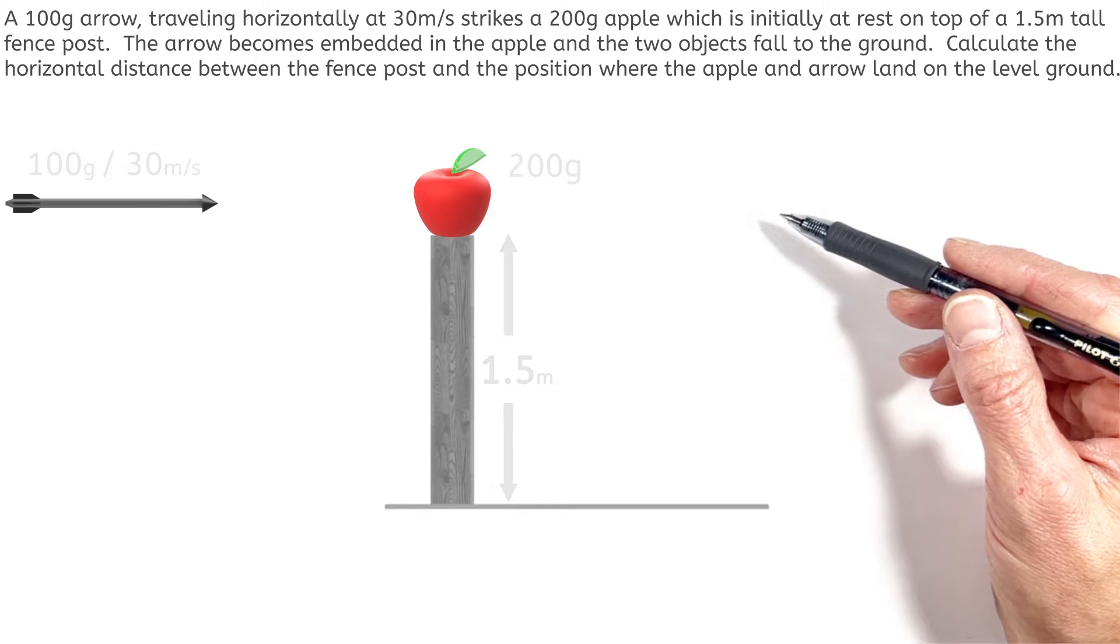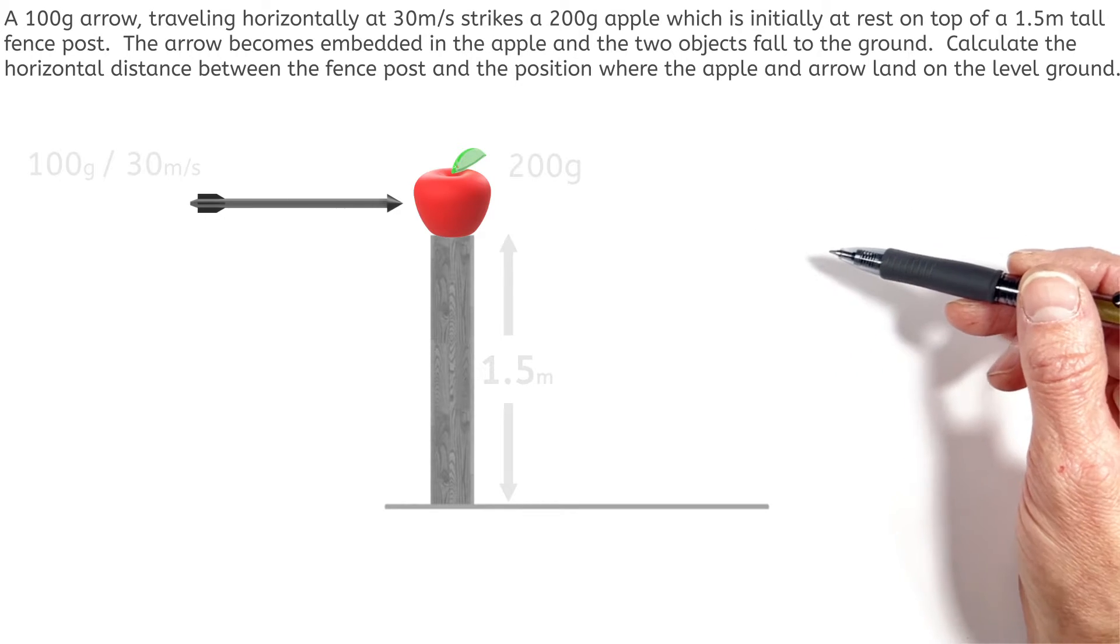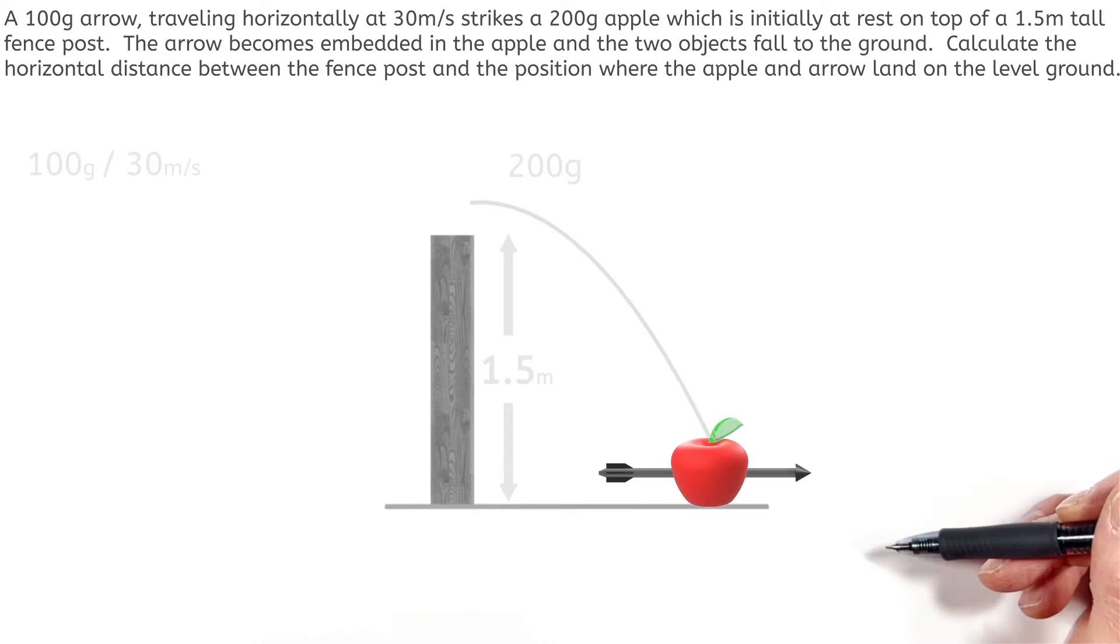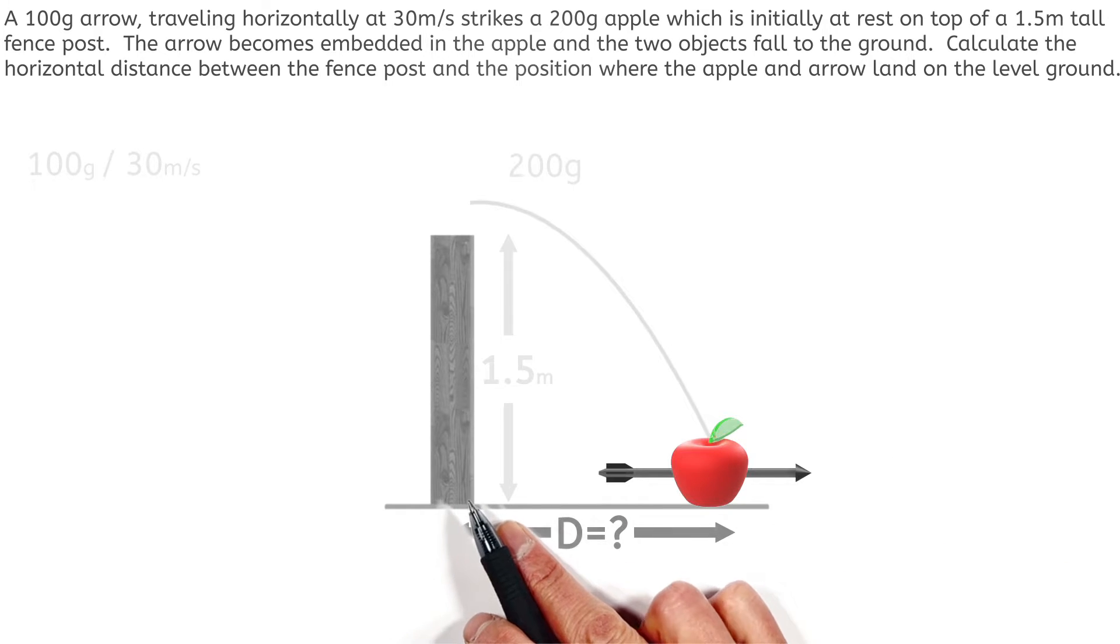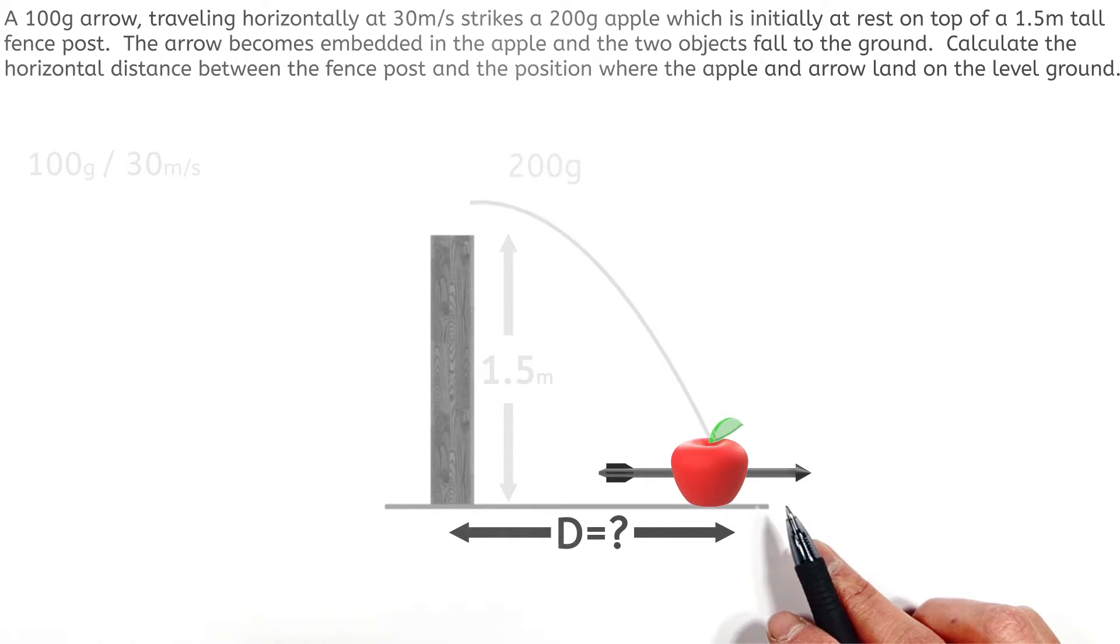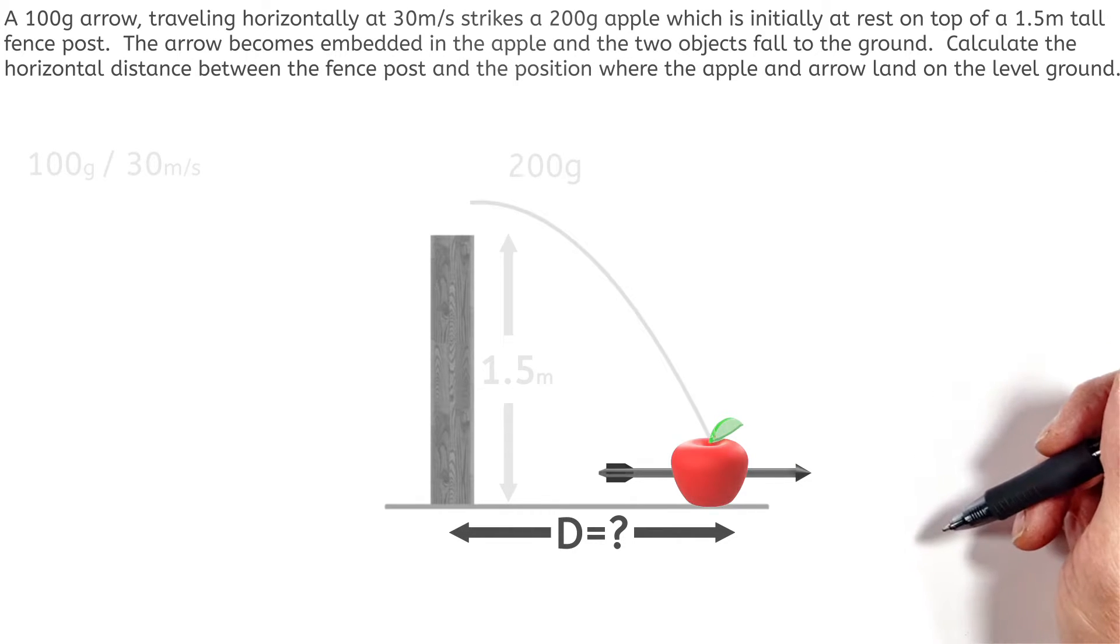Now when the arrow strikes the apple, it's going to become embedded in the apple and the two objects are going to fall together to the ground. And today we're going to calculate the horizontal distance between the fence post and the position where the apple and the arrow land down here on the level ground.